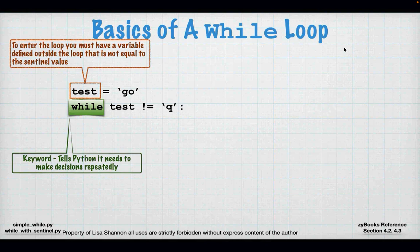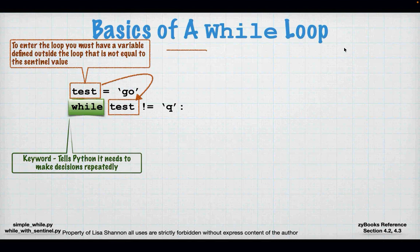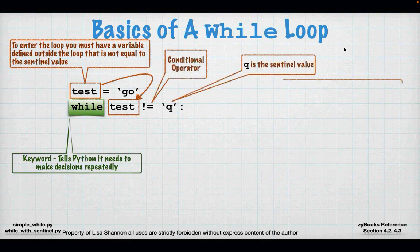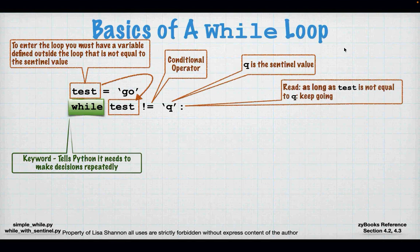While says to Python: I'm about to make a decision repeatedly, I'm about to execute a Boolean statement repeatedly. The variable is the test variable, evaluated against the sentinel value. The sentinel value is just the thing that says stop — stop the loop, stop the execution, walk past the block. Just like branches from last week, we have the test variable, a conditional operator — in this case, not equal to — and the character Q as our sentinel value, plus the colon, because this is a Boolean expression.